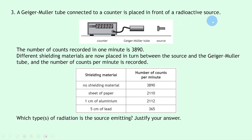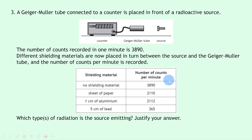Question three: a Geiger-Müller tube connected to a counter is placed in front of a radioactive source. The number of counts recorded in one minute is 3,890. Different shielding materials are then placed in turn between the source and the Geiger-Müller tube, and the counts per minute are recorded. With no shielding material, we detect 3,890 counts per minute.